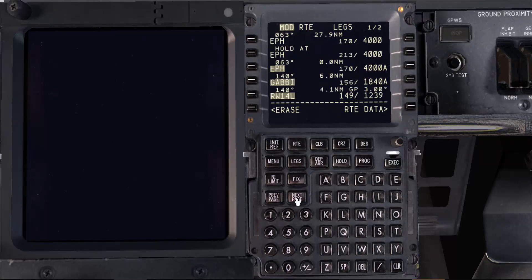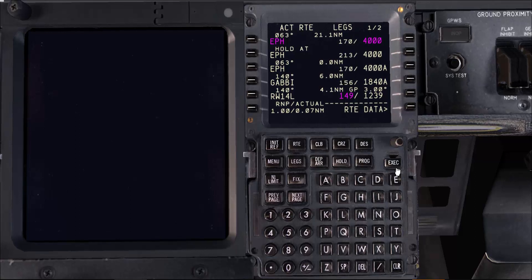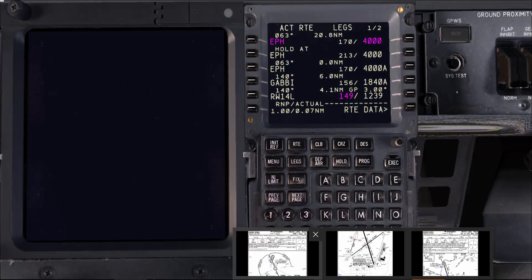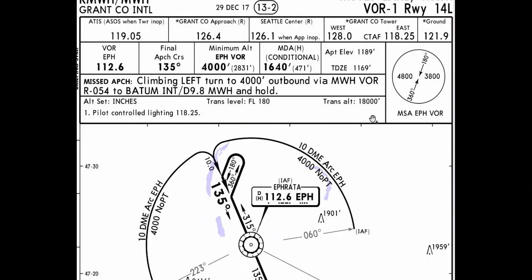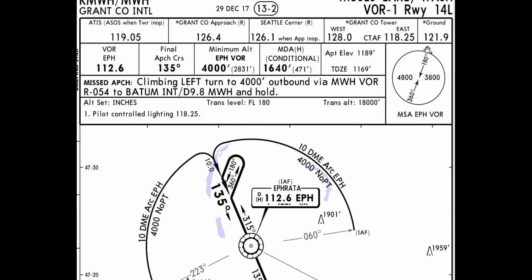Once I do that, I'll confirm with the other pilot: confirm VOR 14L loaded. As soon as we say confirm, we'll execute. Then we'll start the briefing and the setup at the same time. We'll go to the VOR 1 approach charts and, starting from right to left on the first line: Moses Lake VOR 1 runway 14L, chart 13-2, 29 December 2017. It's important for the pilot monitoring to check the chart number and the date to make sure you are both looking at the correct chart.